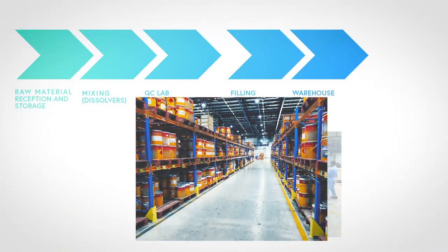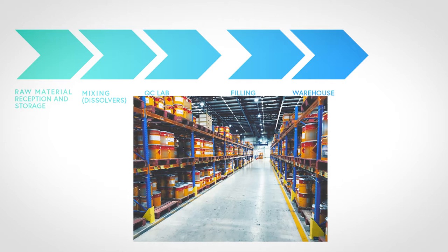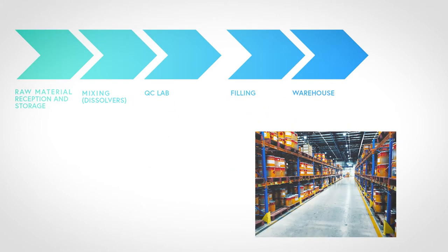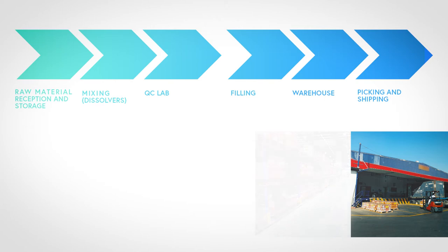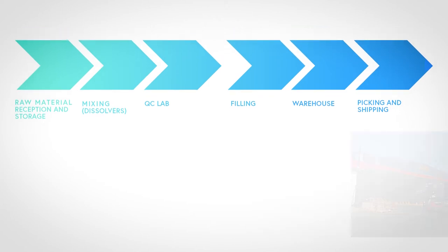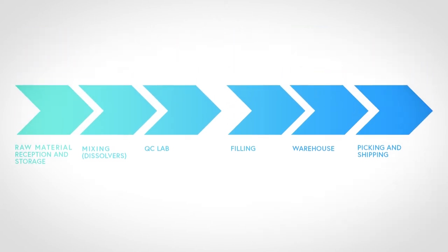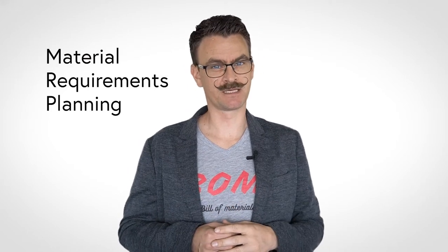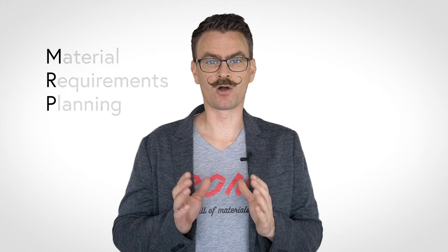After the paint has been filled and labeled, it is transported to the warehouse, where it waits until it is picked and shipped to the customer. Now, how would you plan, schedule, and control the production of this factory? The better your decisions, the better the results. To help you understand production planning, let me introduce an important concept: material requirements planning, MRP.